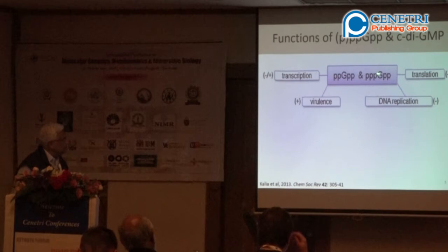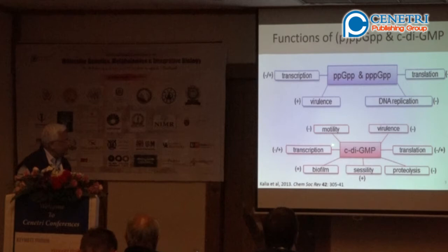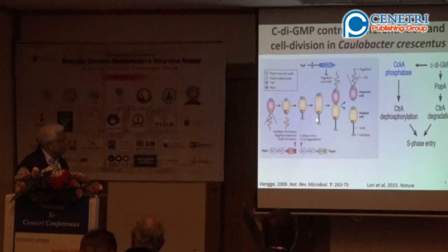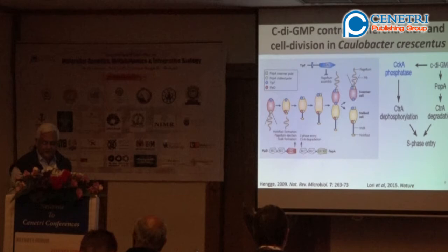The functions include transcription, ppGpp translation, virulence, DNA replication, motility, virulence, biofilm — all of these are currently of great interest, including how they inhibit biofilm and transcription. Cyclic-di-GMP controls differentiation and cell division in Caulobacter, as shown over the last 10 years. Classical work and reviews by Regina Hengge from Germany showed how control of Caulobacter can happen through cyclic-di-GMP.